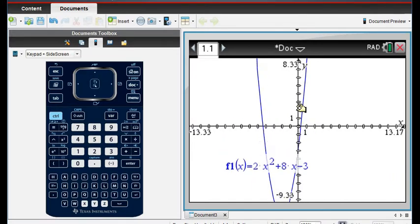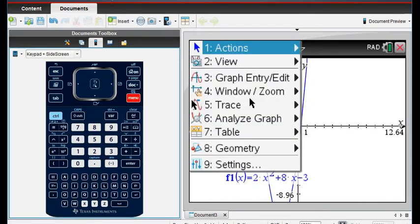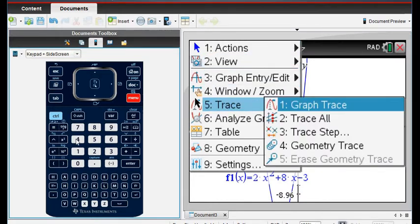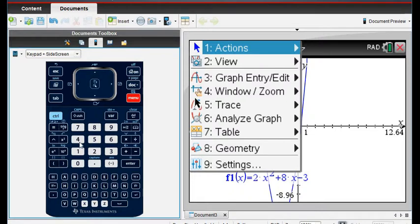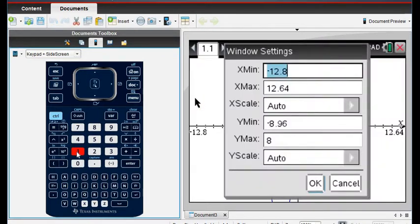Or if you want to be more precise, like you actually want it to be a set value, you can go to menu and you can go to the window, option 4. Sorry, it went to the wrong one. Let me escape out of there. Sometimes on this it's a little bit harder. So I'm going to hit option 4, and I want to choose option 1, the window settings.